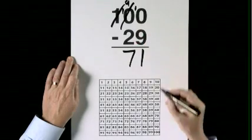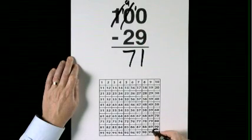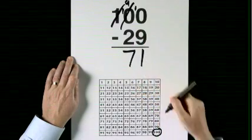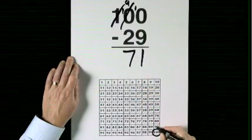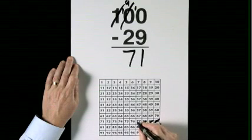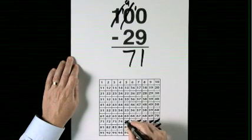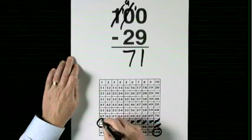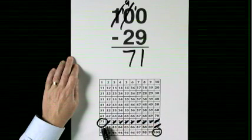100 subtract 29: take 10, take 20. 1, 2, 3, 4, 5, 6, 7, 8, 9. 71.